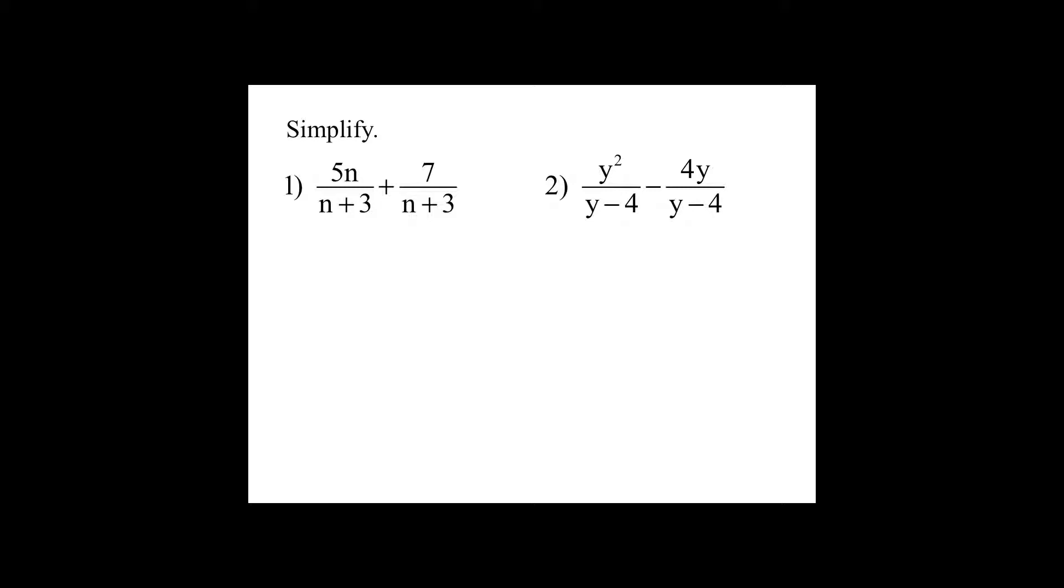Now check your work. 5n plus 7 all over n plus 3. This can't be simplified anymore. Now in number 2, I have y squared minus 4y all over y minus 4.